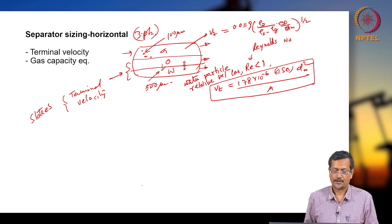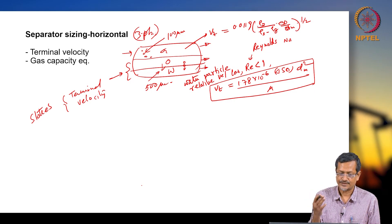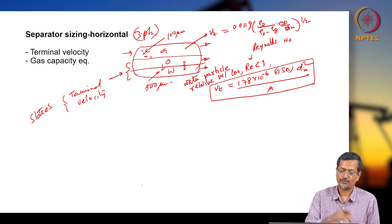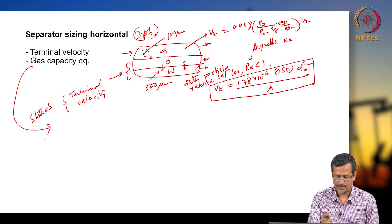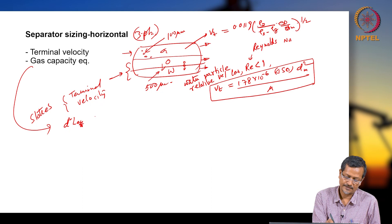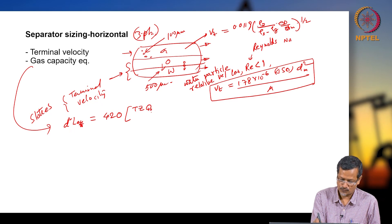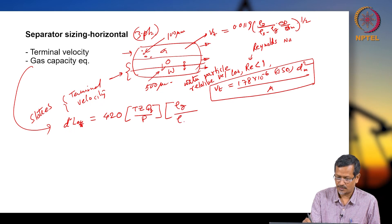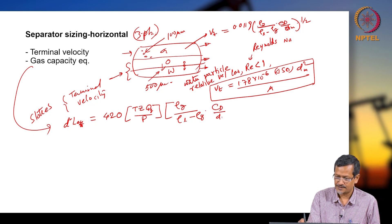After terminal velocity calculation, you go to gas capacity-based calculation. As in two-phase separator, first calculate gas capacity, then go to liquid capacity-based solution. The gas capacity formula is: d² × L_eff = 420 × T × Z × q_gas / p × [ρg / (ρliquid − ρg) × cd / dm]^(1/2).